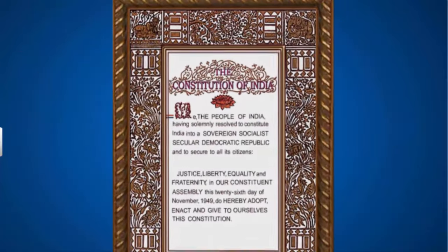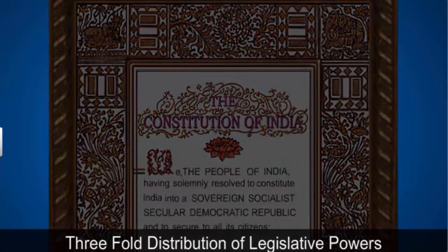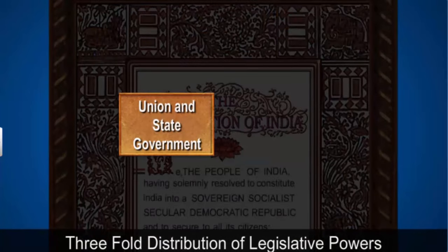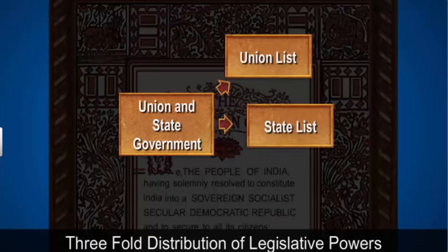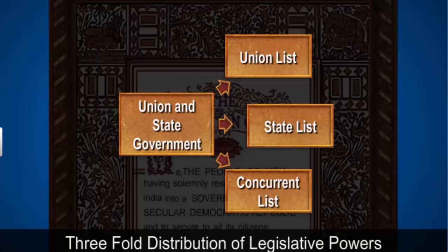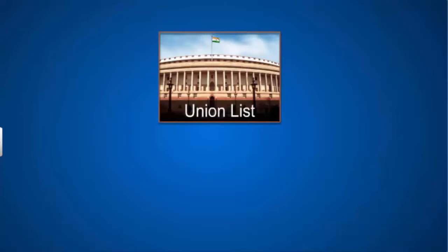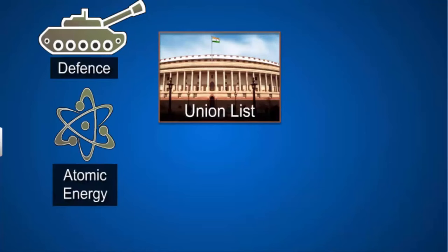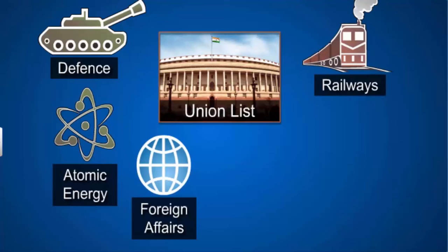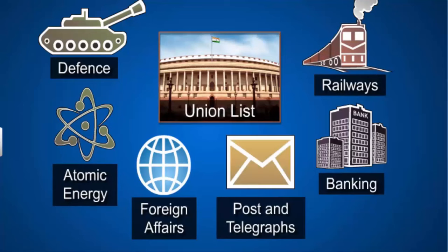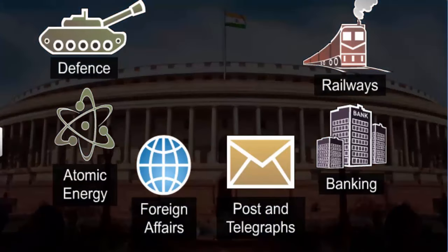The constitution provides a three-fold distribution of legislative power between the central and state governments through three lists: the Union List, State List, and Concurrent List. The Union List includes 97 subjects of national importance such as defense, atomic energy, foreign affairs, railways, banking, and posts and telegraphs. These matters need a uniform policy throughout the country, and laws on Union List subjects can solely be made by parliament.